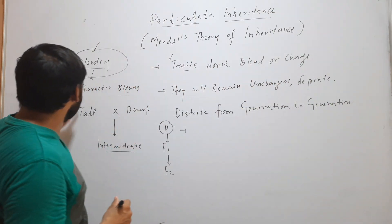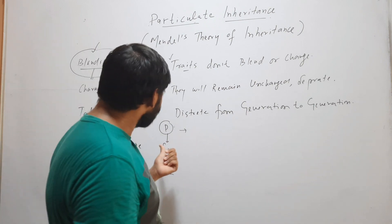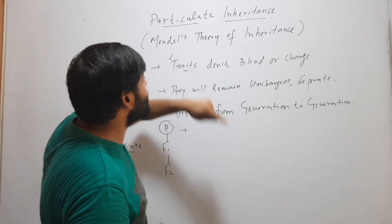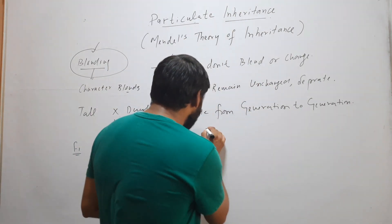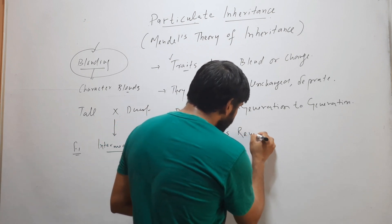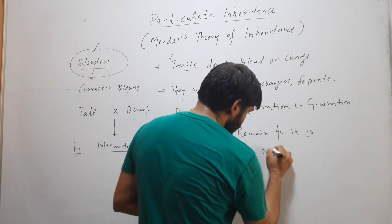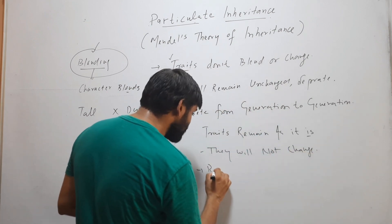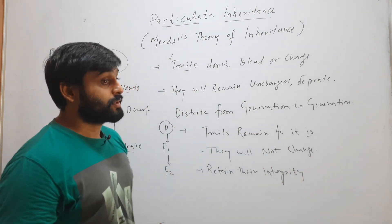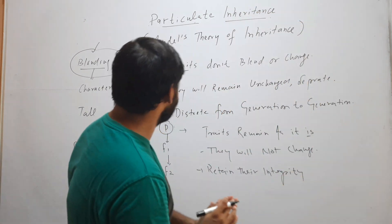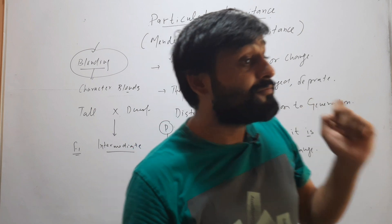The blending theory says that traits change — for example, in F1 we get a trait of intermediate length between tall and dwarf. But according to particulate inheritance, traits will remain the same as they are. They will not change from generation to generation; they retain their integrity.